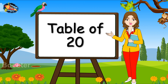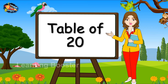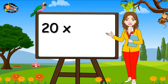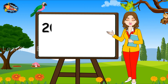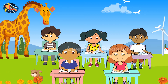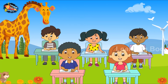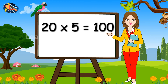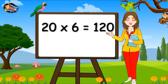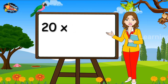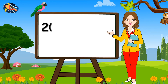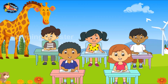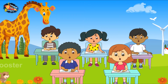Table of 20. 20 1s are 20. 20 2s are 40. 20 3s are 60. 20 4s are 80. 20 5s are 100. 20 6s are 120. 20 7s are 140. 20 8s are 160. 20 9s are 180. 20 10s are 200.